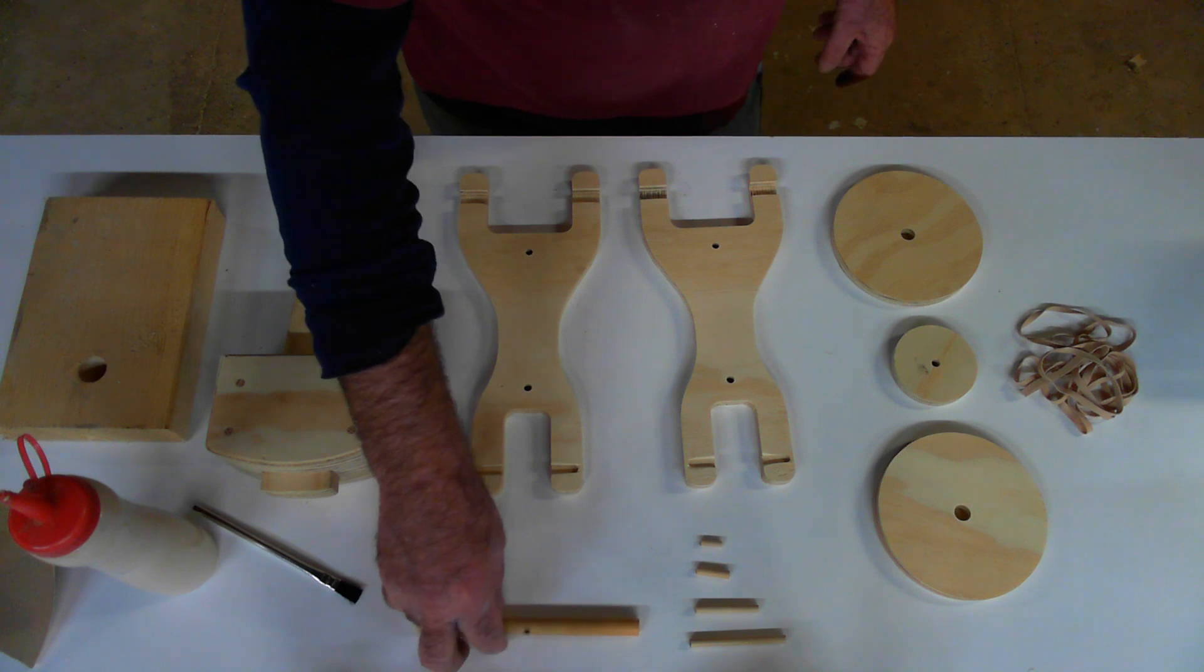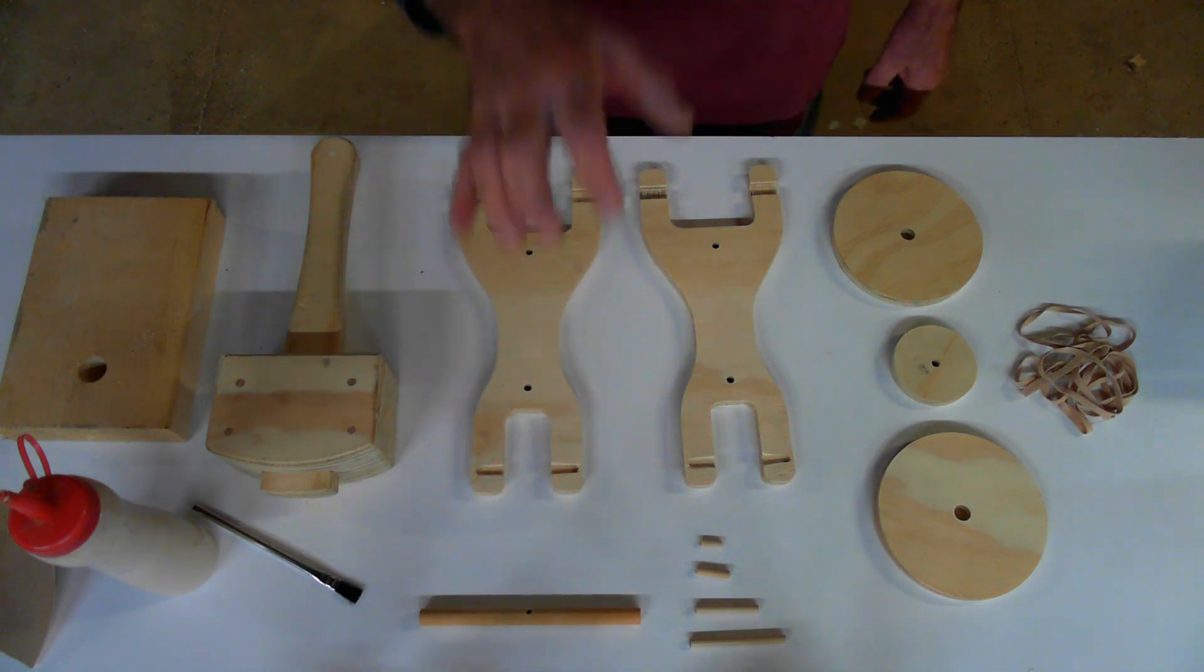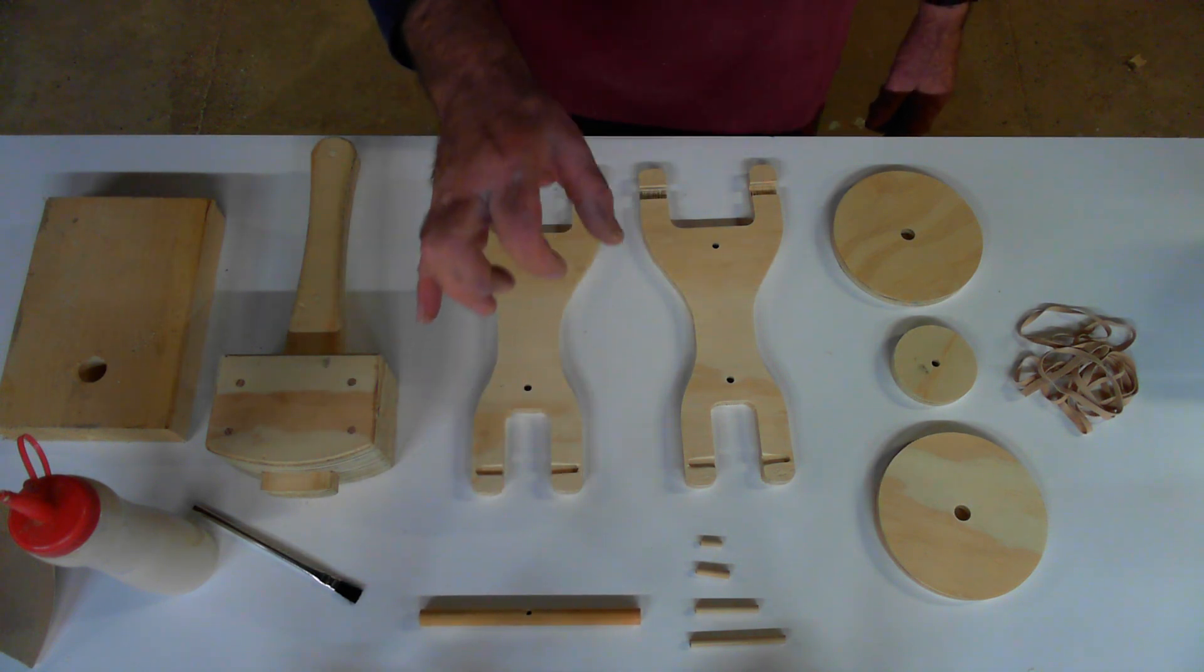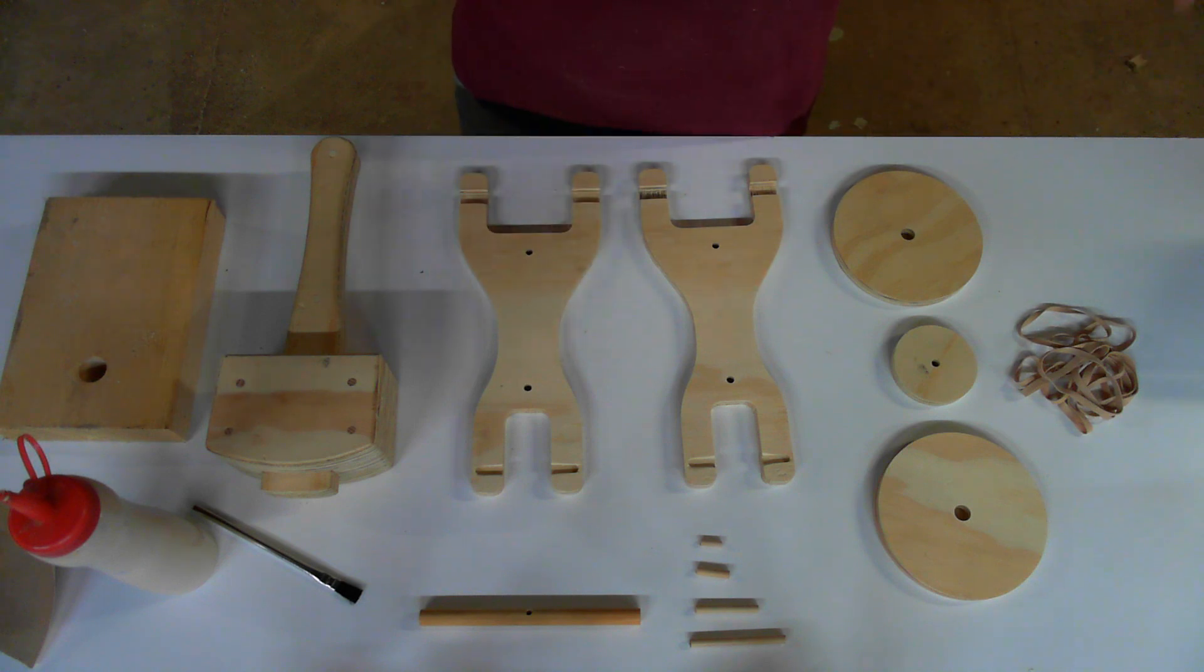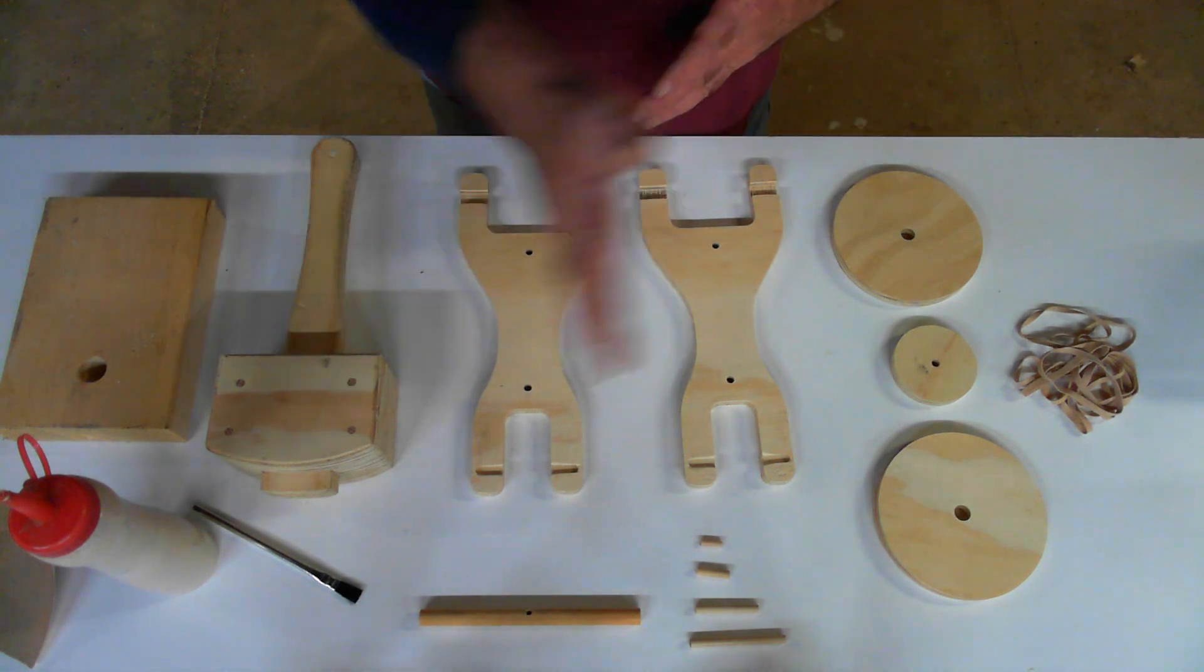Then you've got a series of dowels. You've got a half-inch dowel that's about seven inches long. And it depends on whether you cut them at a three-foot piece of dowel or a four-foot length of dowel. And it's in the instructions what length to cut them to optimize the material.